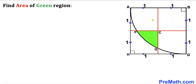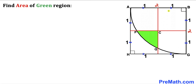Welcome to pre-math. In this video we have a quarter circle with center B fully inscribed in a square ABGH. As a result we get this green shaded region. The dimension of this square is 2 across the board and the radius of this quarter circle is 2 units as well. Our task is to calculate the area of this green shaded region.